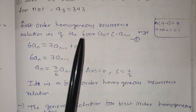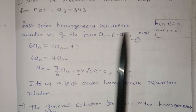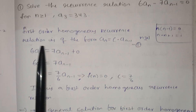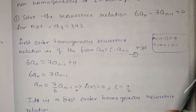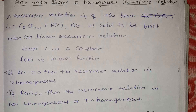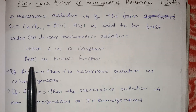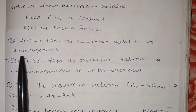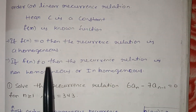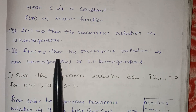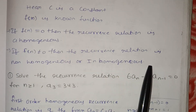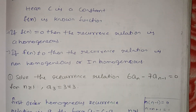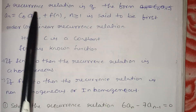This is a first-order homogeneous recurrence relation. We call it homogeneous because f(n) = 0. If f(n) ≠ 0, i.e., it contains some numbers, we call it non-homogeneous.